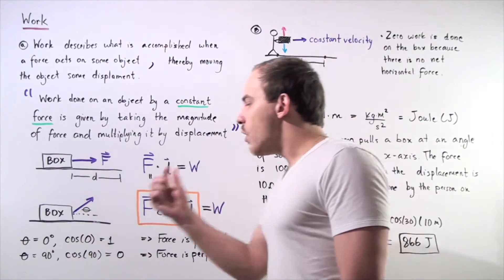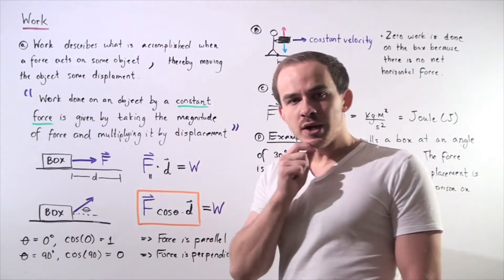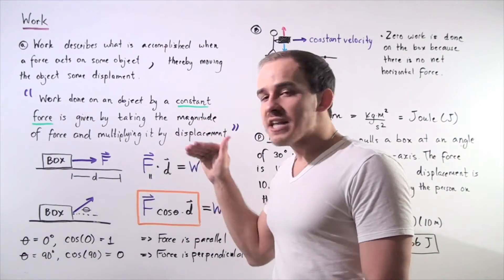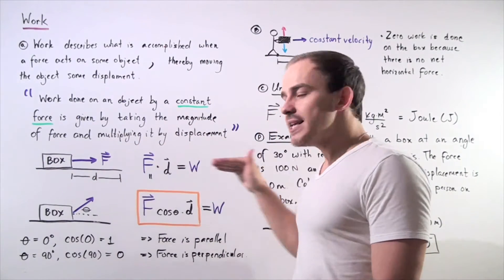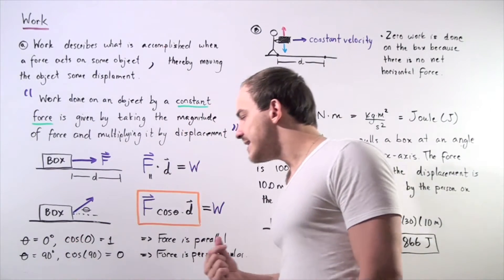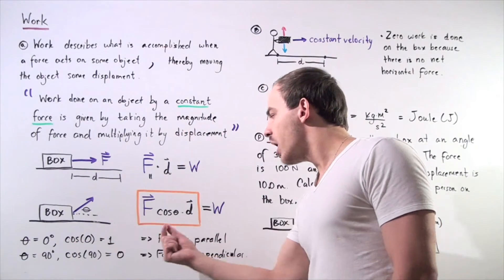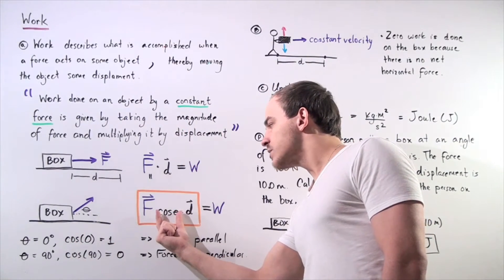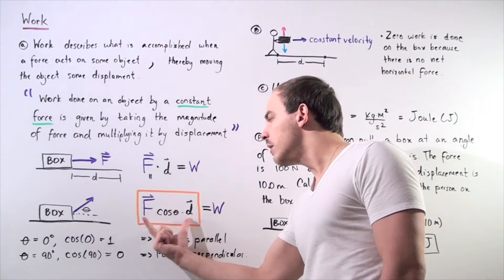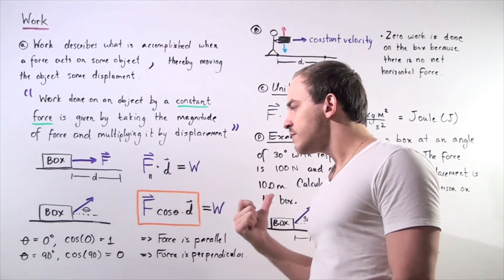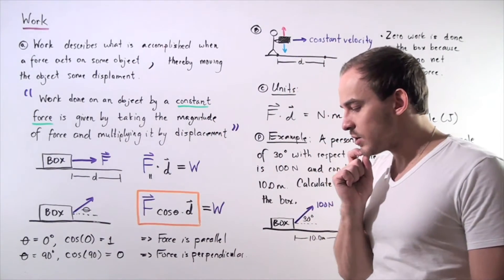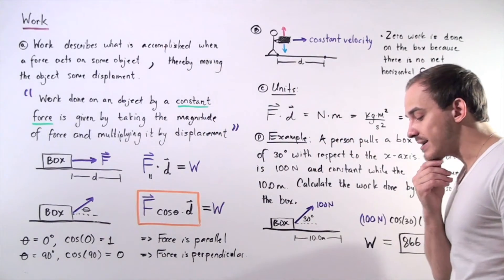When the angle is zero degrees, the force acts in the same direction as displacement. Because cosine of zero is one, the general formula W = F·cos(θ)·d simplifies to W = F·d. So the formula with cosine reduces to the simpler formula when the angle is zero, which makes sense mathematically.